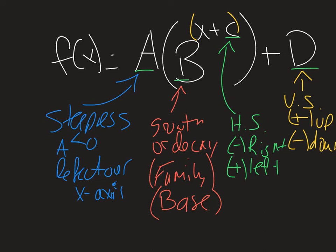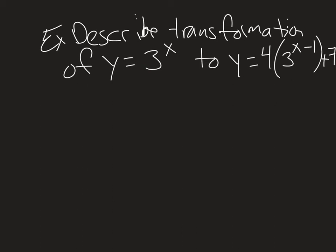And we'll do an example to kind of put this into practice here. So here's an example. We want to describe the transformation from y equals 3 to the x to y equals 4 times 3 to the x minus 1 plus 7.